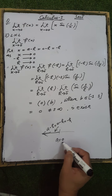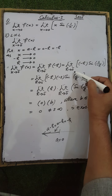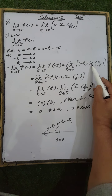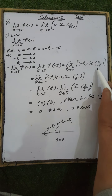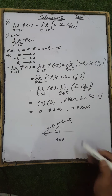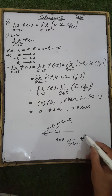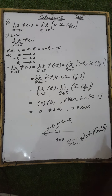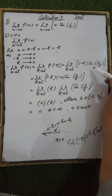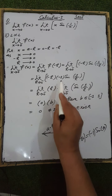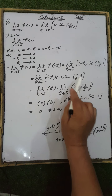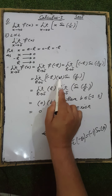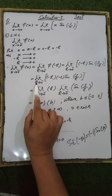Replacing x by minus h, we get the limit as h tends to 0 of (minus h)·sin(1/(minus h)). Since sin(minus θ) = minus sin(θ), sin(minus 1/h) = minus sin(1/h). So the expression becomes (minus h)·(minus sin(1/h)) = h·sin(1/h), with the two negatives canceling to give plus 1.